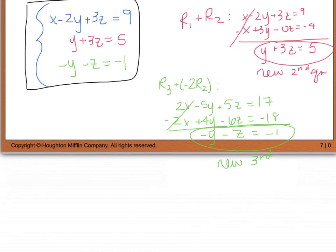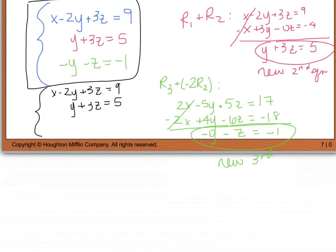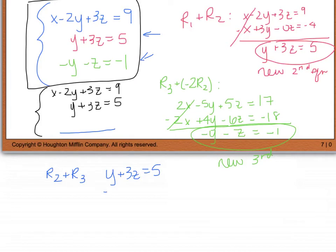I'll rewrite what I've already got, then come up with a new third equation. I'll add r2 and r3 together: y plus 3z equals 5, added to negative y minus z equals negative 1. The y's cancel, and I'm left with 2z equals 4, which tells me z equals 2. So now I can write z equals 2 and I have solved my system.